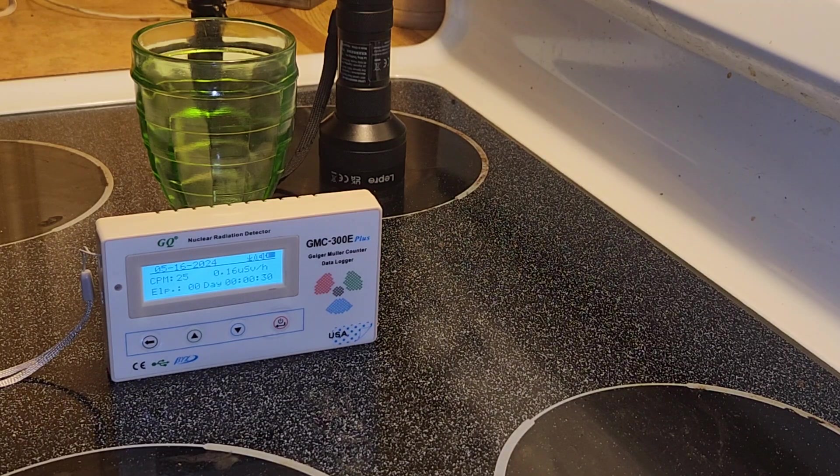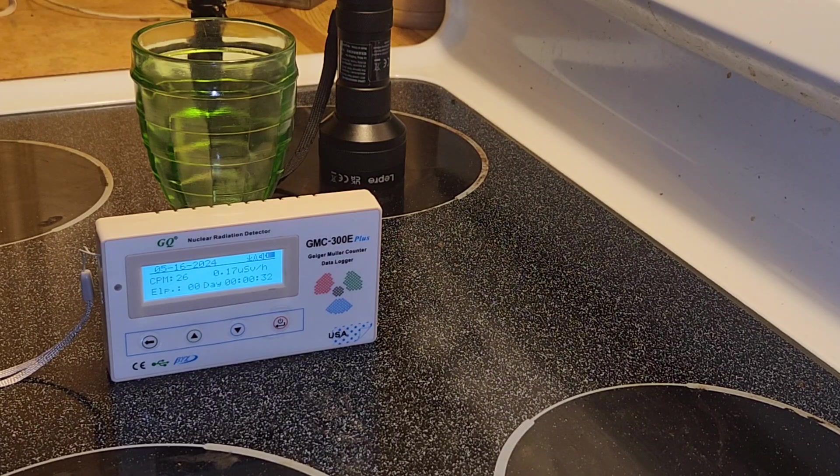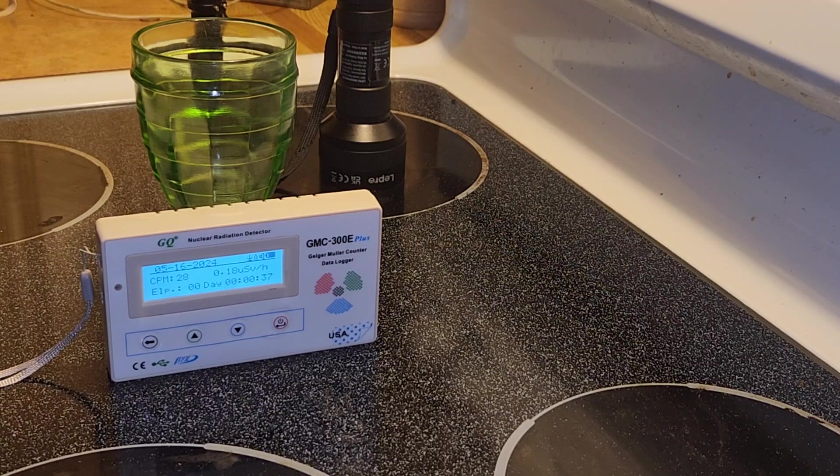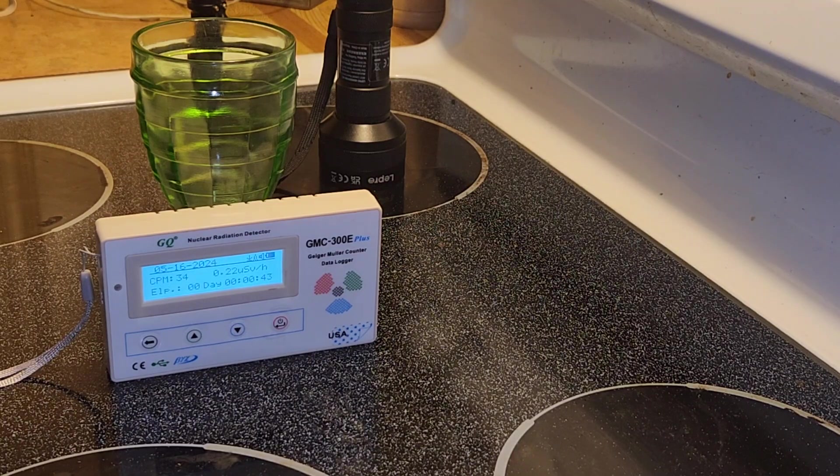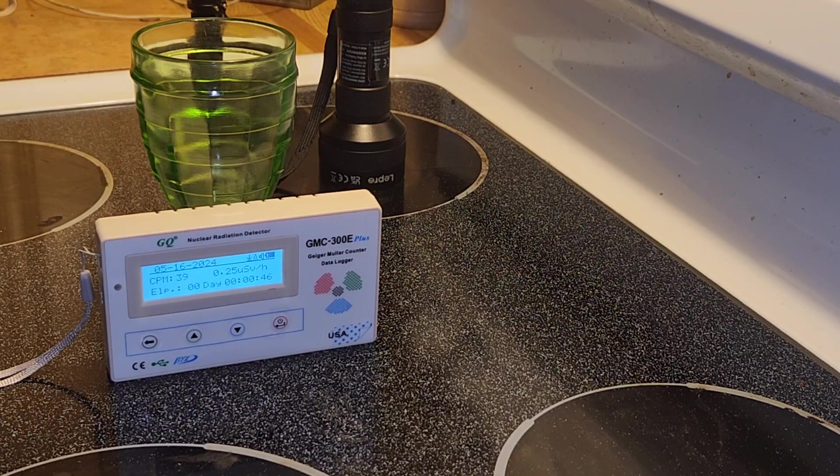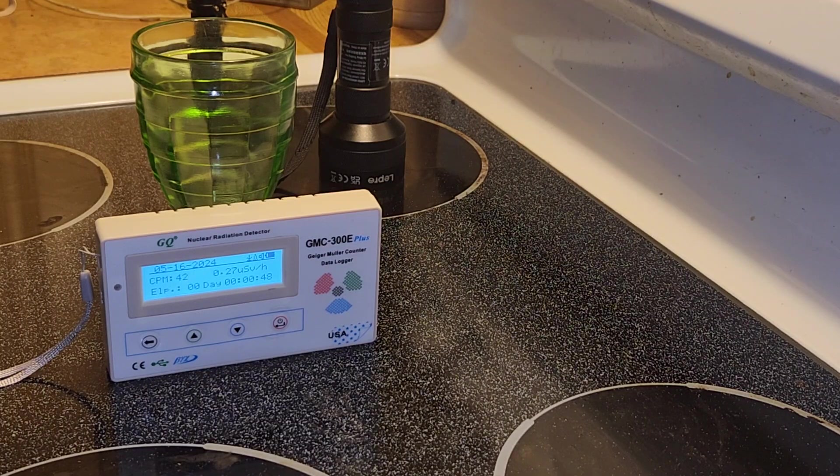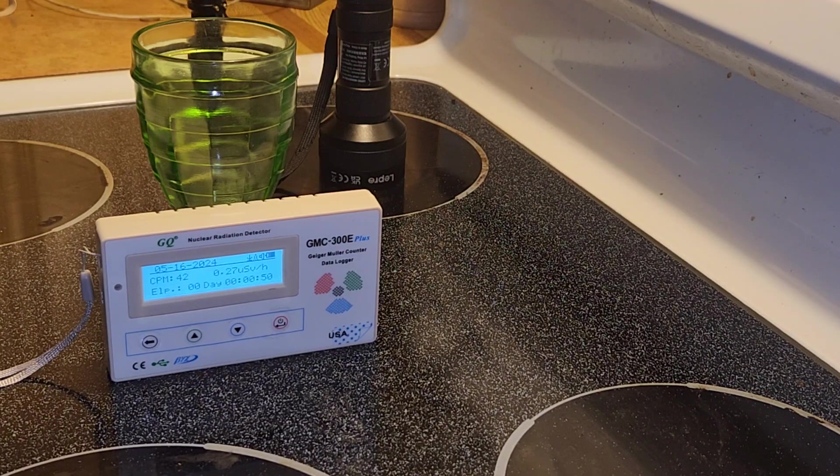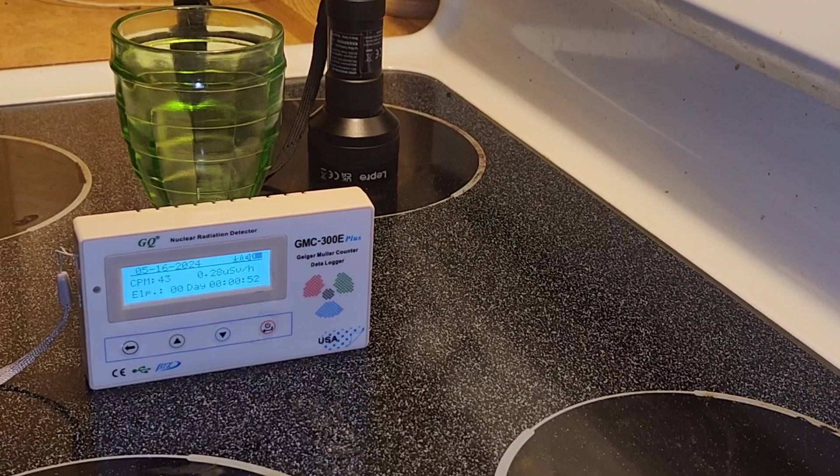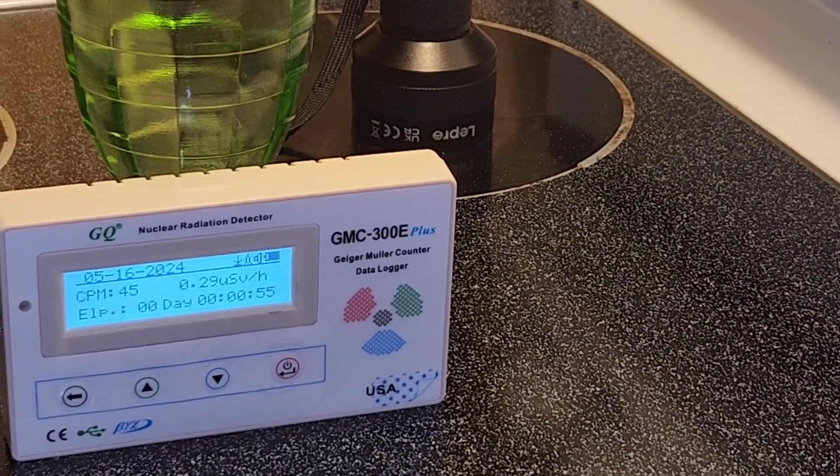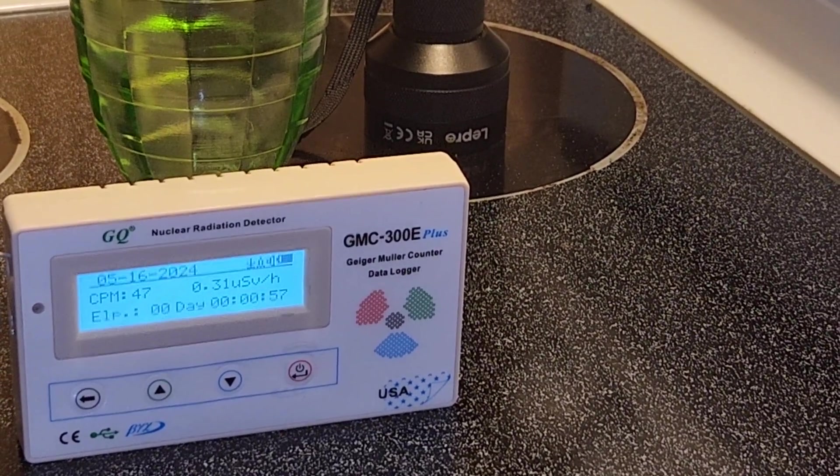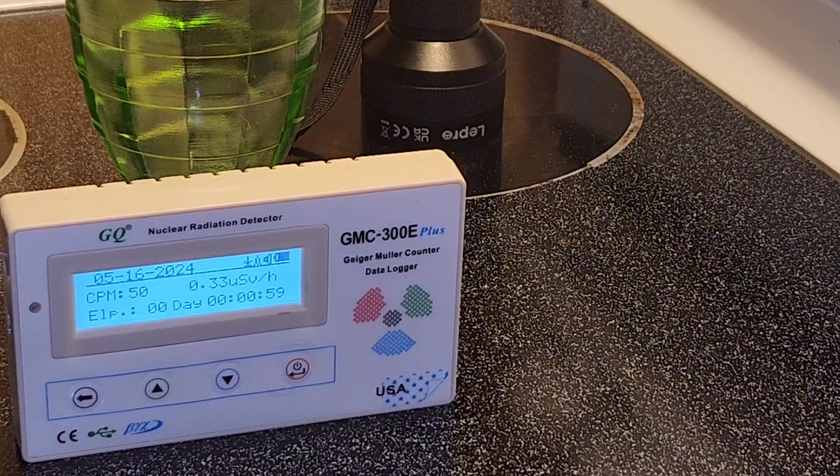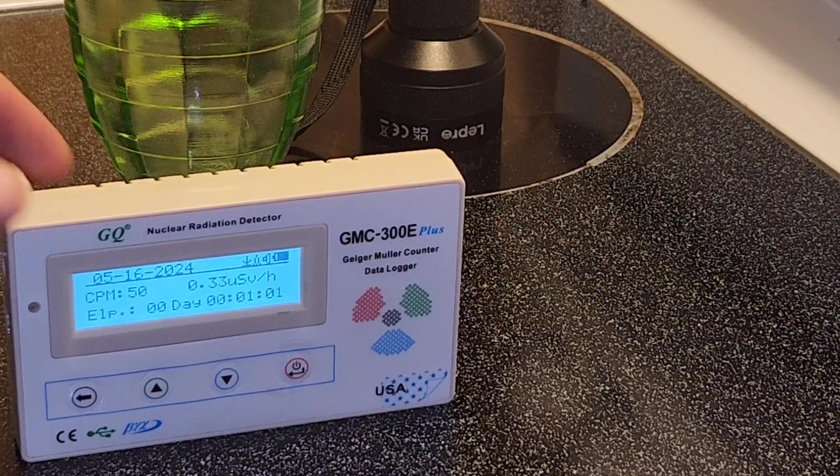It went up to about 50 or so. That varies on the level of radiation, the type of glass, and how much uranium. It isn't perfectly reliable, but it can help you figure out what type of material you're dealing with. At one minute, it's 50 counts per minute.